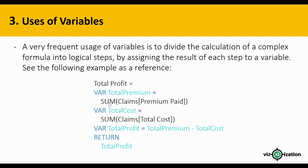The first variable is TotalPremium — note these two words are together with no space — and its DAX expression is SUM. The second variable is TotalCost, also using SUM. The third variable is TotalProfit, which is the difference between TotalPremium and TotalCost. Finally, the keyword RETURN returns TotalProfit as the result.